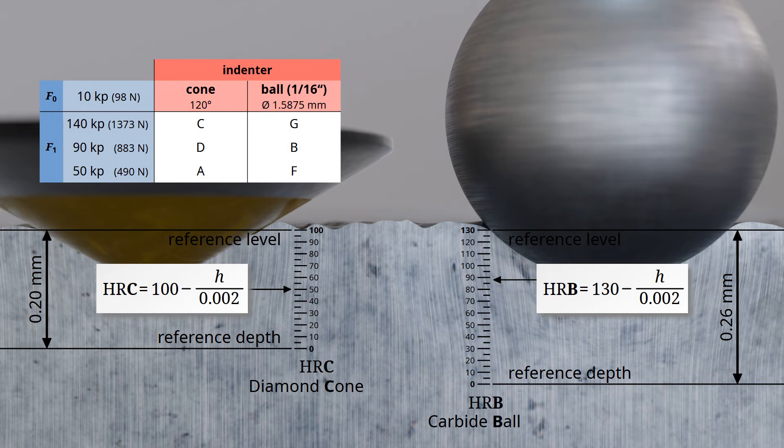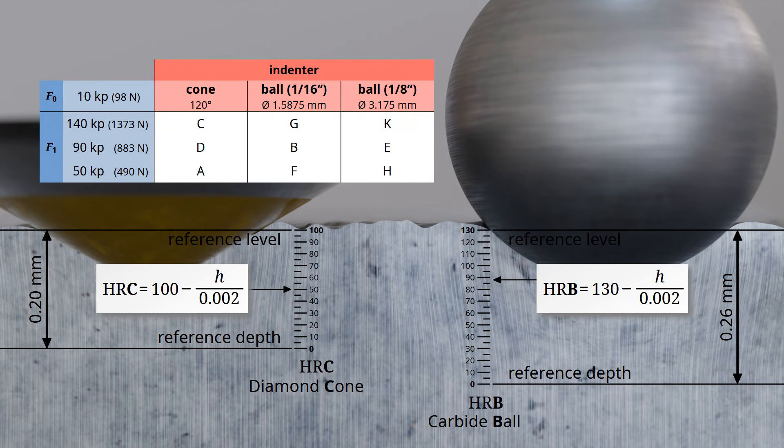In special scales, cemented carbide balls with a diameter of 1/8th of an inch can also be used as indenters. The table provides an overview of the common Rockwell scales. The hardness values determined with different scales are generally not comparable. Additionally, the hardness value determined using a specific scale must fall within a certain range. If the value falls outside of this range, the scale must be changed, as the indenter has either penetrated too deeply or not deeply enough into the material.